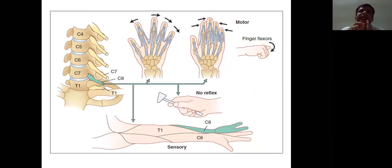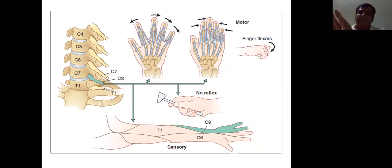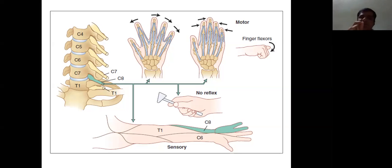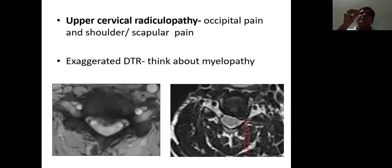For C7-T1 disc prolapse, the C8 nerve root is involved — this is very rare. C8 radiculopathy may be confused with ulnar neuropathy because the sensory disturbance is along the ulnar aspect of the forearm, involving the ring finger and little finger. Motor testing includes abduction and adduction of fingers and finger flexors. There is no reflex for C8 radiculopathy. Always differentiate C8 radiculopathy from ulnar neuropathy.